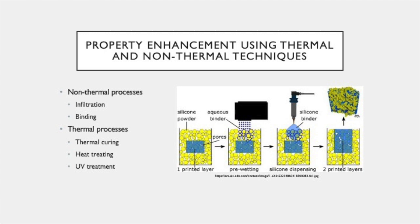For photopolymer processes, it is very common for polymerization to not be 100% completed during the building process. Due to this, several different post-processing procedures help to complete and strengthen the photopolymer. The first is a post-cure apparatus, which is a machine that uses UV and visible radiation to completely cure the inside and outside of the part. Secondly, if a part is put into a very low temperature oven and allowed to cure, the mechanical properties of that part will be greatly enhanced.